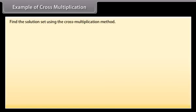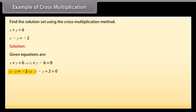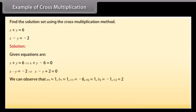Example of cross multiplication: Find the solution set for x + y = 6 and x − y = −2. Rewriting: x + y − 6 = 0 and x − y + 2 = 0. We observe that a1 = 1, b1 = 1, c1 = −6, a2 = 1, b2 = −1, c2 = 2.